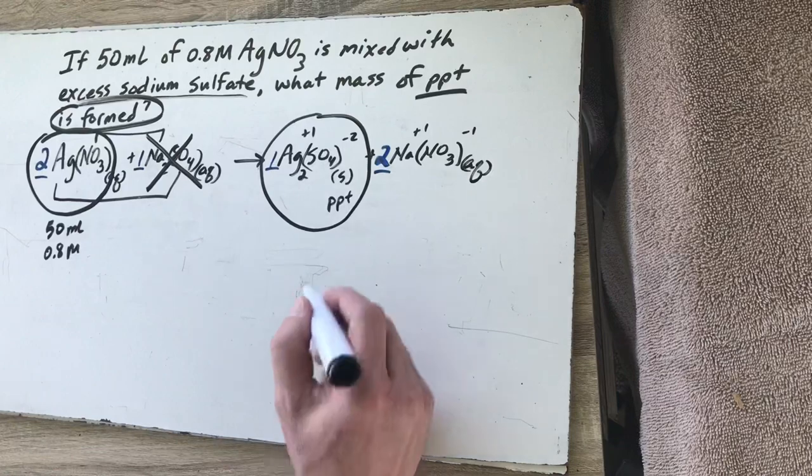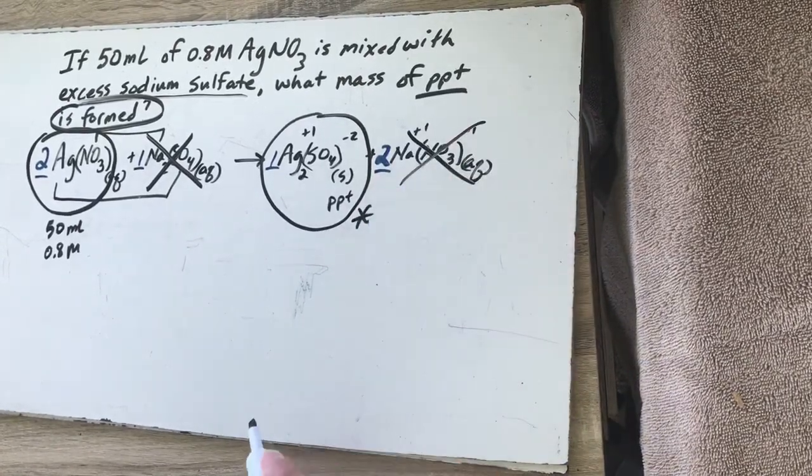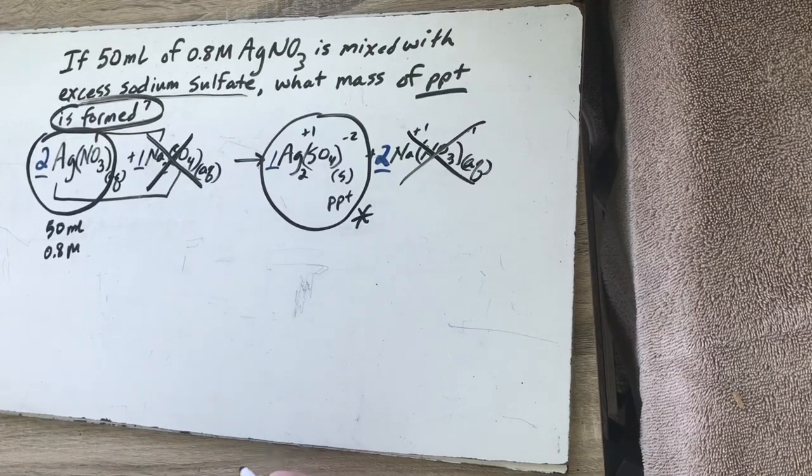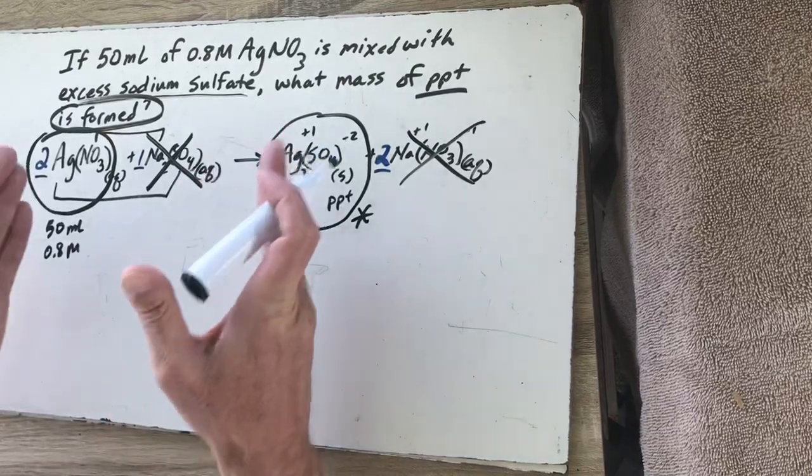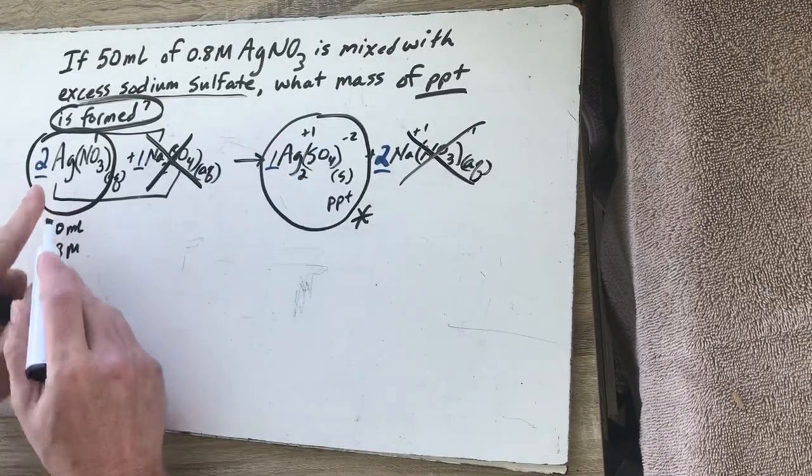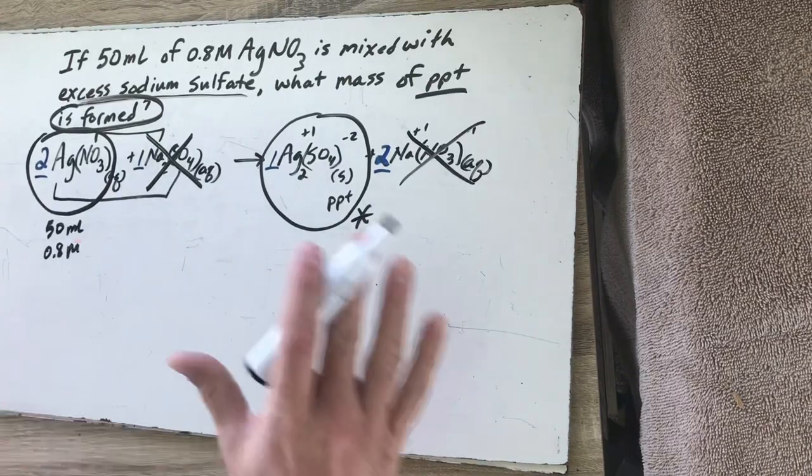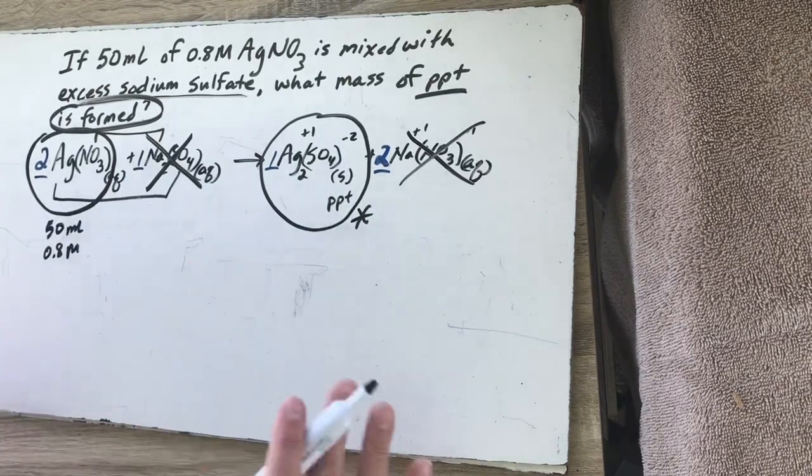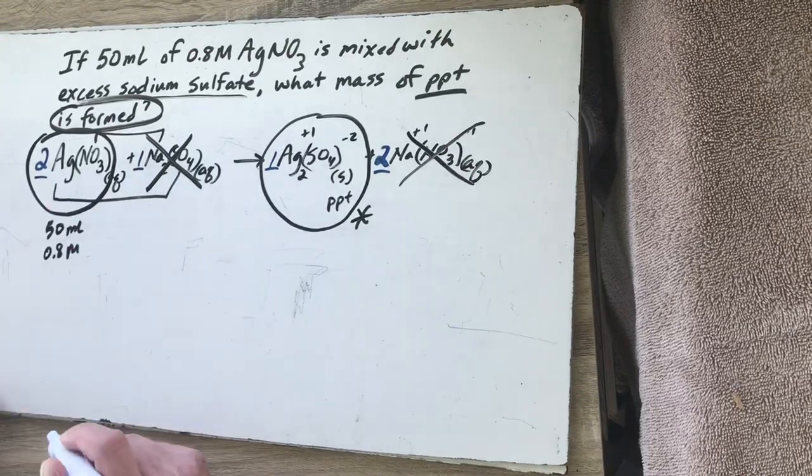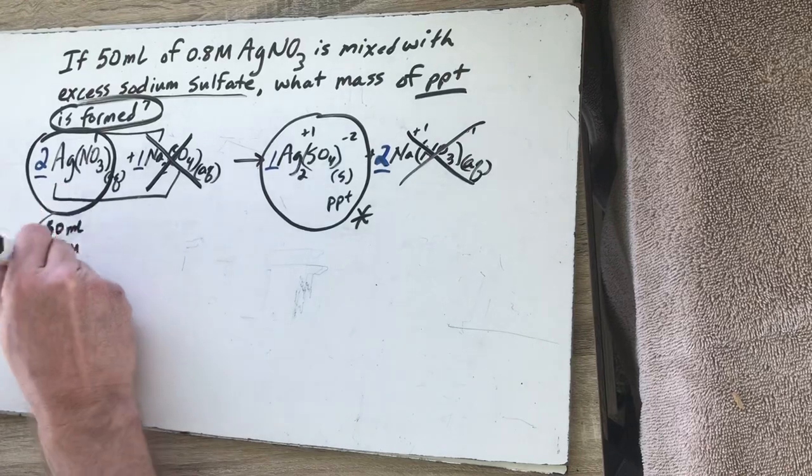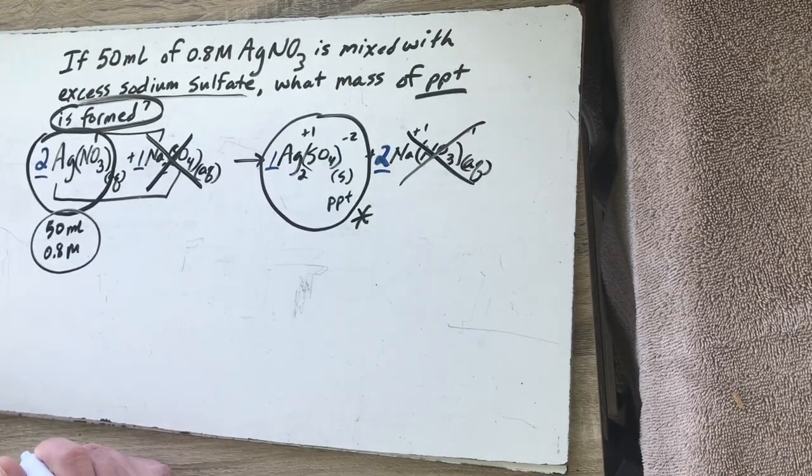That's what we're going to analyze. We don't want to pay attention to the spectator ions that are still floating around in the solution. So what I've done is I've taken four things and I've narrowed it down to two. I'm starting with silver nitrate. I'm going to try to figure out how much silver sulfate it makes. Now all of that is stuff we've done before. The only new part comes in how we begin our stoichiometry. We need to take our starting data, our measurements for this solution, and we need to turn those into moles.